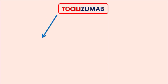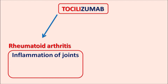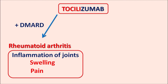Similarly, tocilizumab is indicated to control inflammation in rheumatoid arthritis. Rheumatoid arthritis is one of the autoimmune disorders which produces inflammation of the joints, resulting in swelling as well as pain. In such conditions, tocilizumab can be given to control the inflammation, and it can be combined with other agents like disease-modifying anti-rheumatic drugs such as methotrexate, which modify the immune response and thereby control the inflammation.